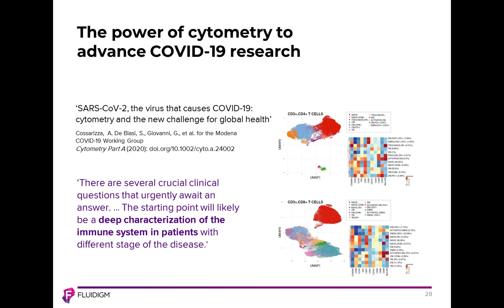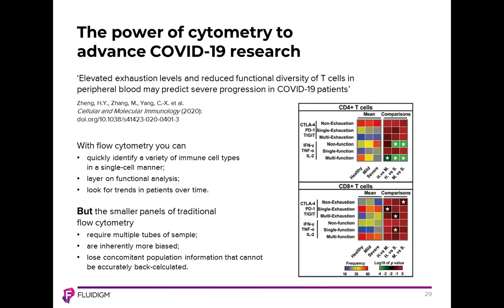We've also seen additional papers where clinical studies using cytometry unveiled new insights into mechanisms of action and how one can potentially treat the disease effectively. In a paper by Zeng et al. published in Cellular and Molecular Immunology, they demonstrated through cytometry that they could identify changes in a variety of immune cell populations on a single-cell basis. In addition to elucidating changes in immune cell populations, they had flow cytometry panels that added functional analysis — looking at both the change in state of cells and changes in immune cell populations.